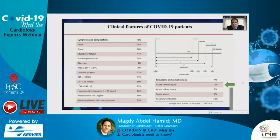The clinical features of COVID-19 include fever, cough, myalgia or fatigue, sputum production, diarrhea, leukopenia, lymphopenia, elevated liver enzymes, elevated creatinine, increased LDH, increased troponin I in 12% of patients, and procalcitonin may be normal or decreased. Around 30% of patients develop acute respiratory distress syndrome. Acute cardiac injury has been reported in 12%, acute kidney injury in 7%, septic shock in 7%, and secondary infection in 10%.